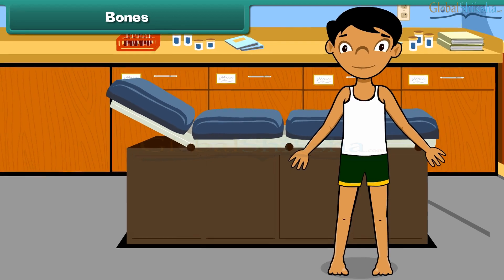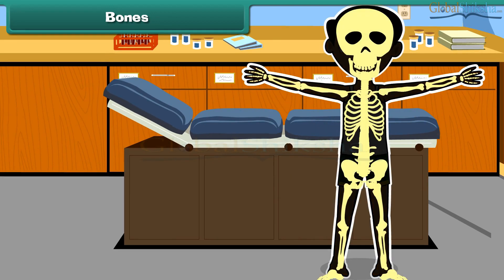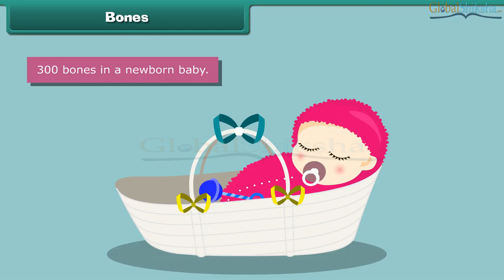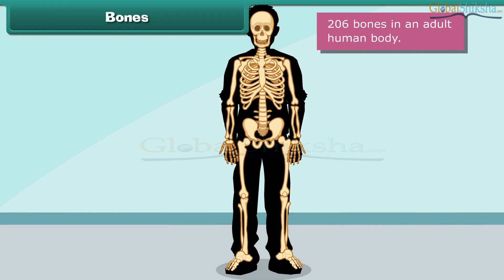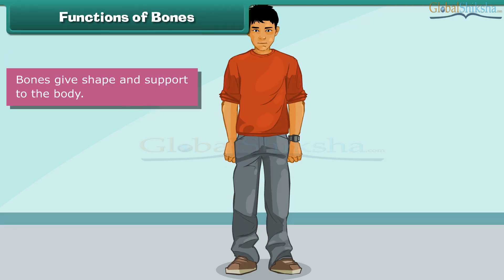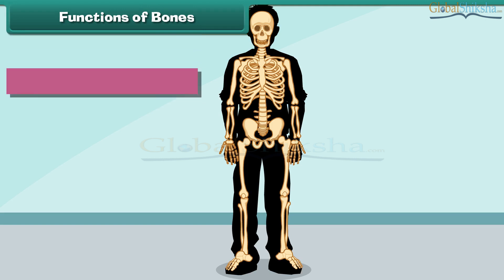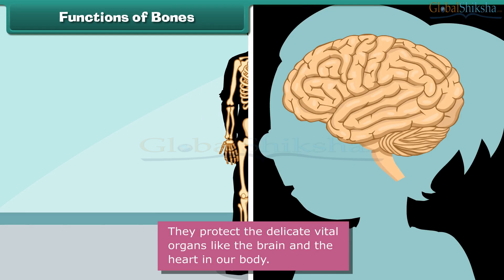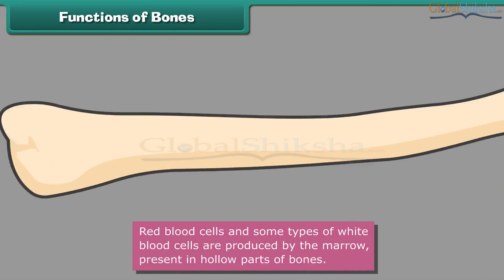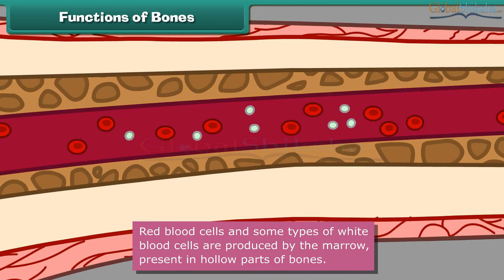Every single person has a skeleton made up of many bones. These bones give your body a structure. At birth, a newborn baby has about 300 bones, whereas an adult human body contains approximately 206 bones. Bones give shape and support to the body and help in body movements. They protect the delicate vital organs like the brain and the heart. Red blood cells and some types of white blood cells are produced by the marrow present in the hollow parts of the bones.